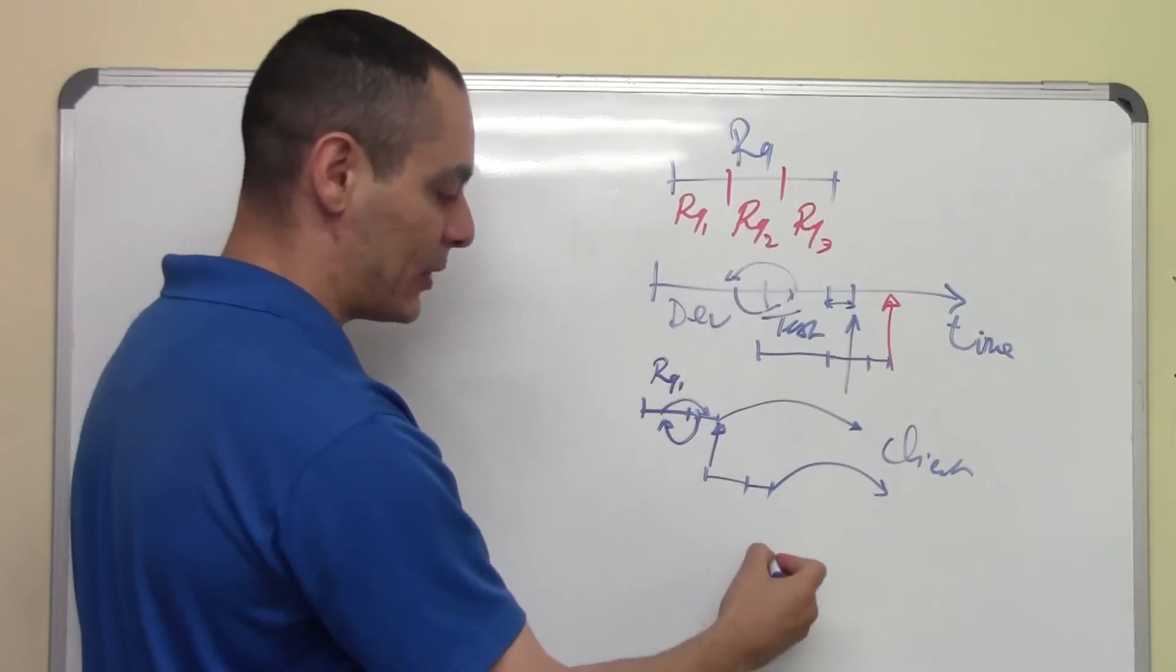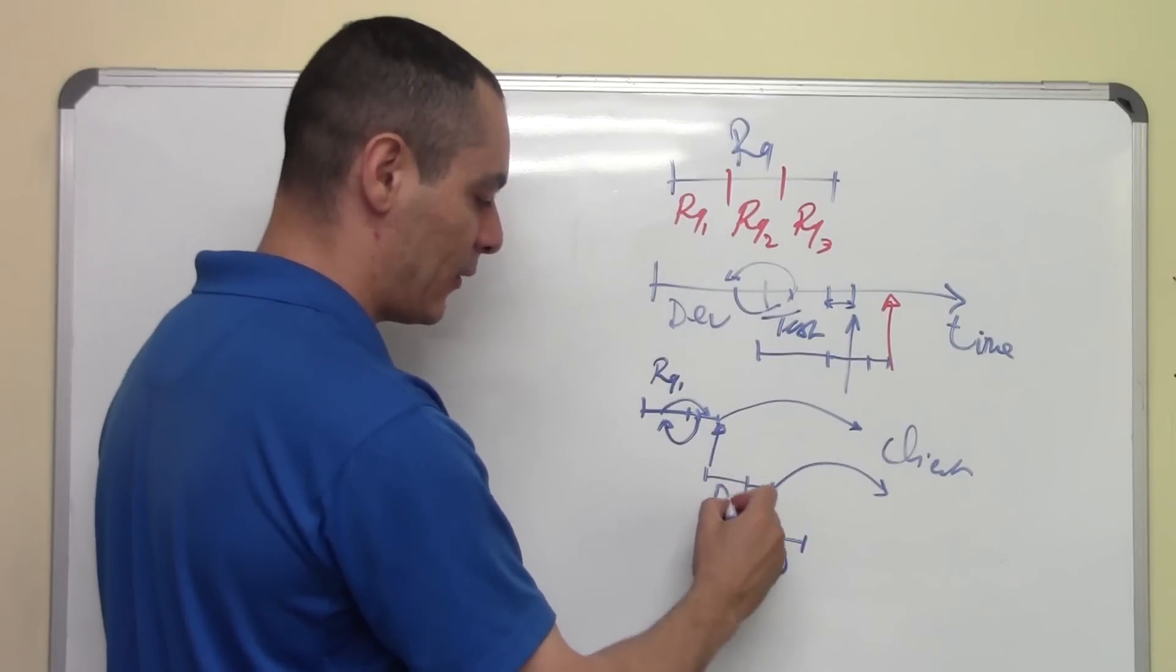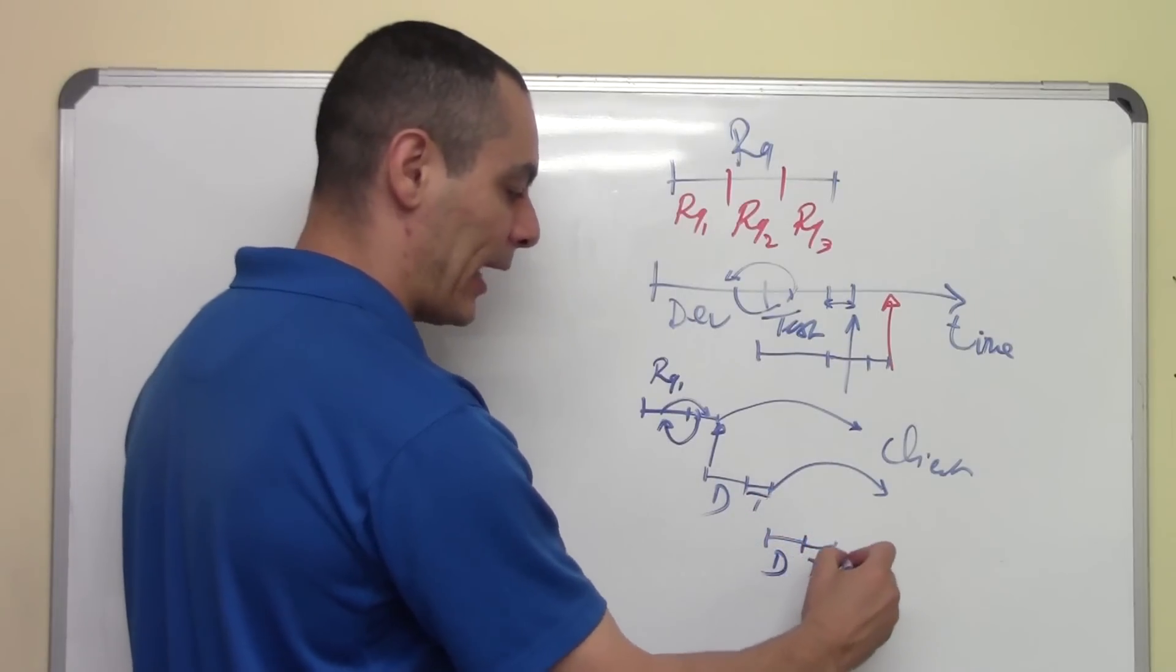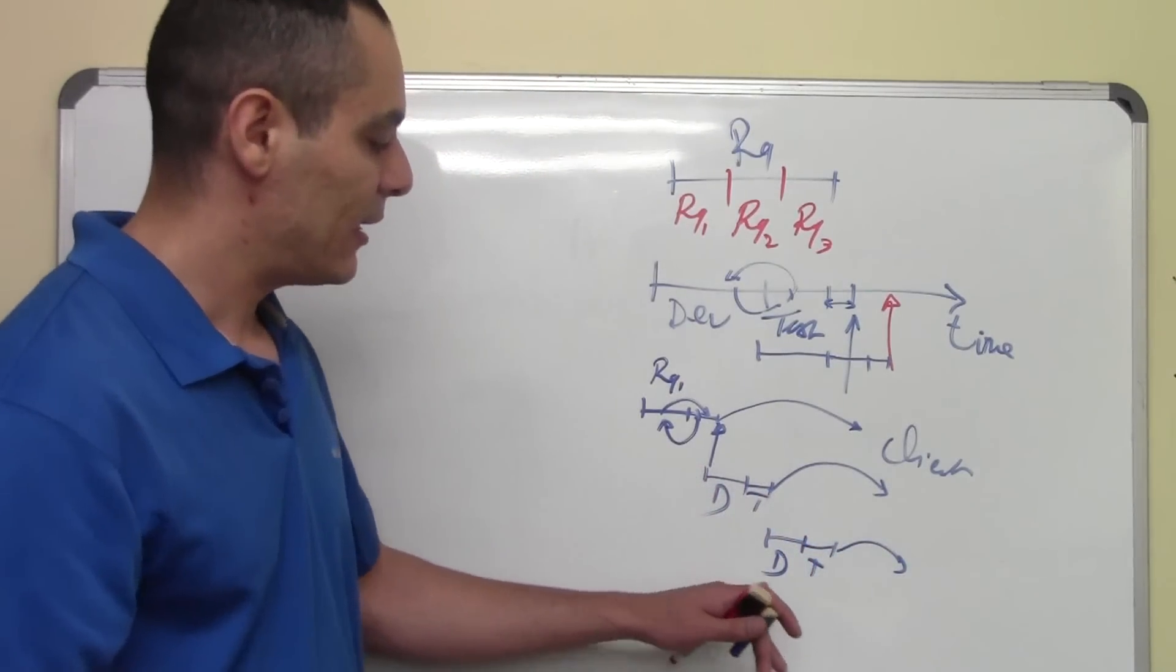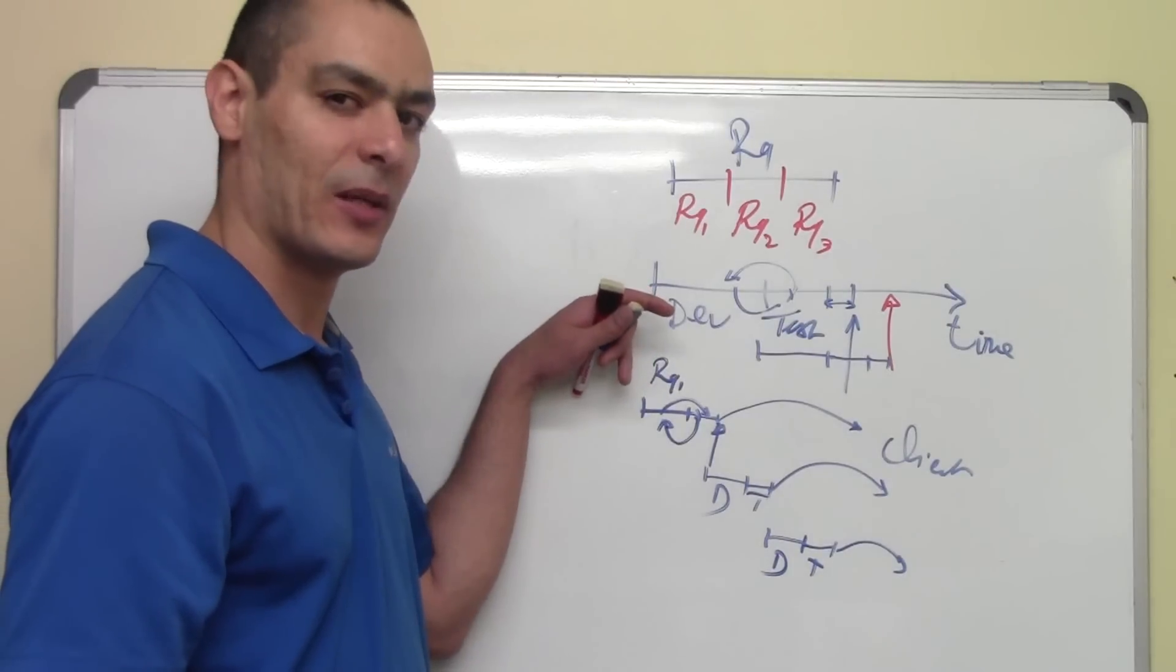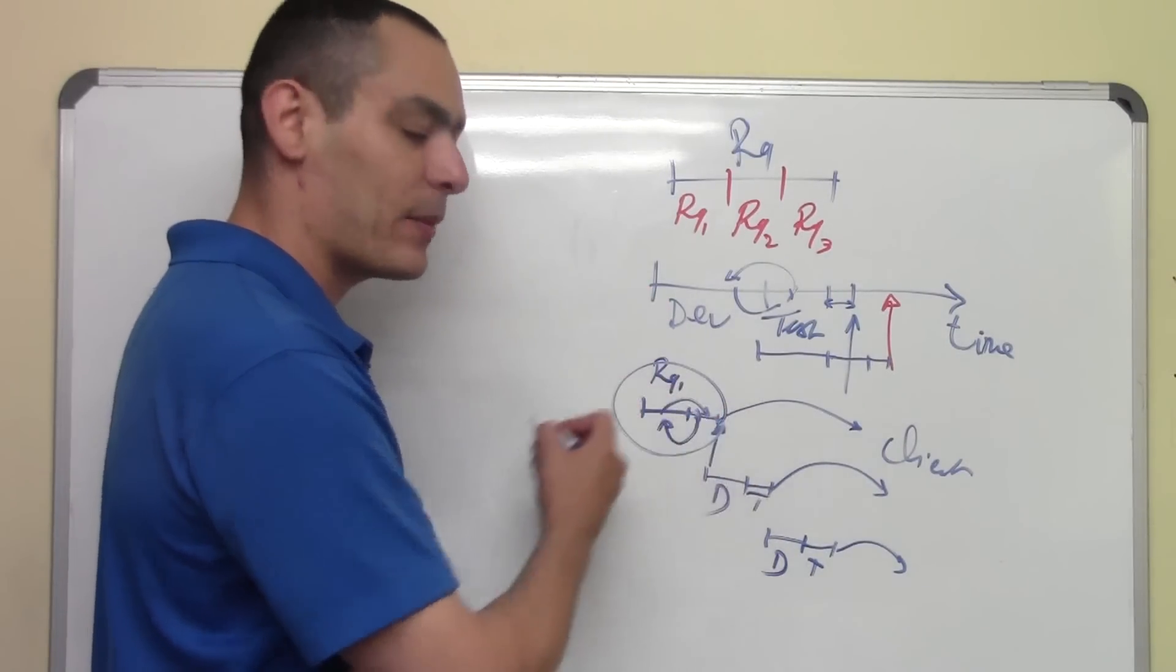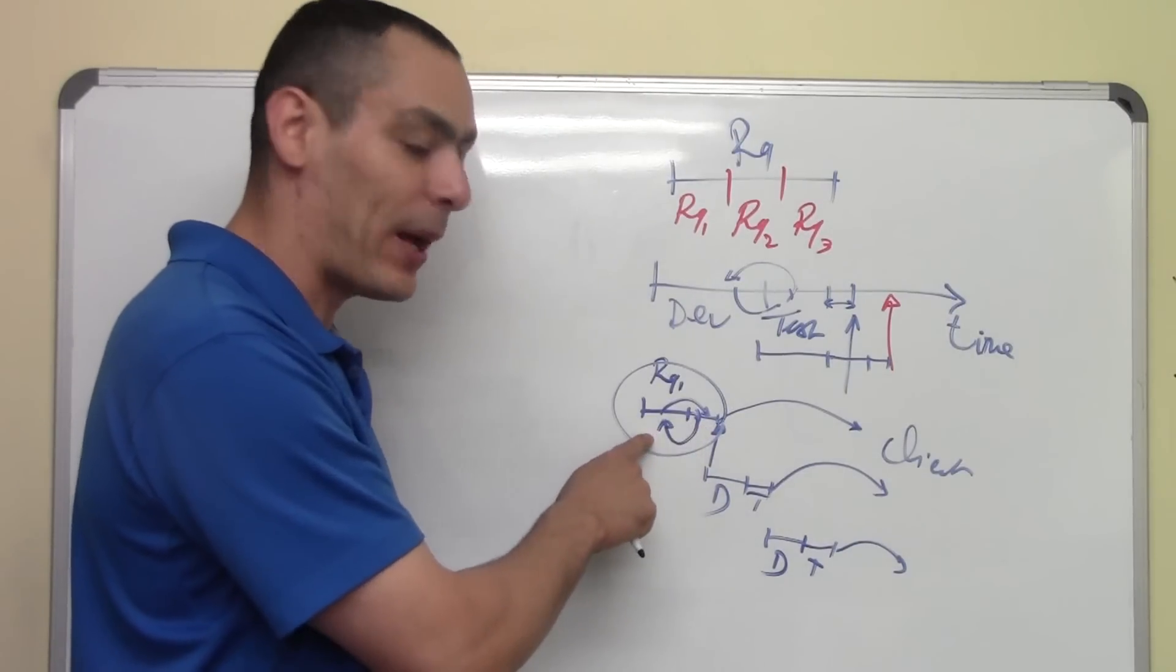We take the last requirements here. We develop—this is the development part, process—and this is the test process, and we deliver it to our clients. This is much more manageable than the other process. Why? Because the requirements are not that big. We can manage it. If something goes wrong, we can go back and fix it.